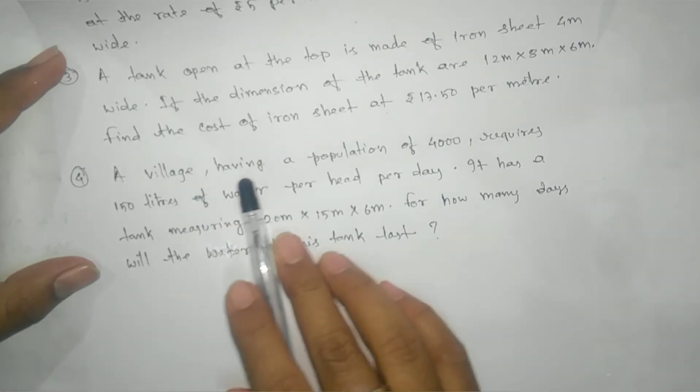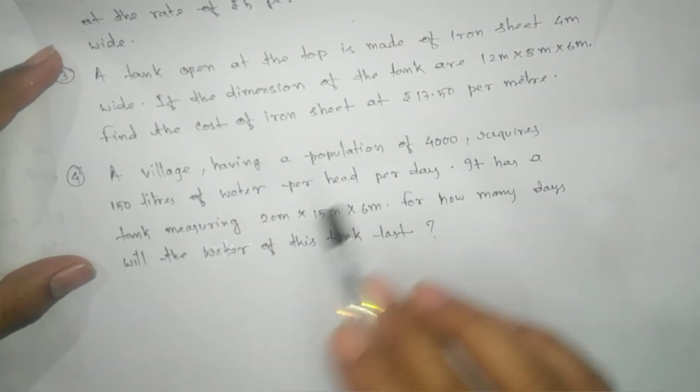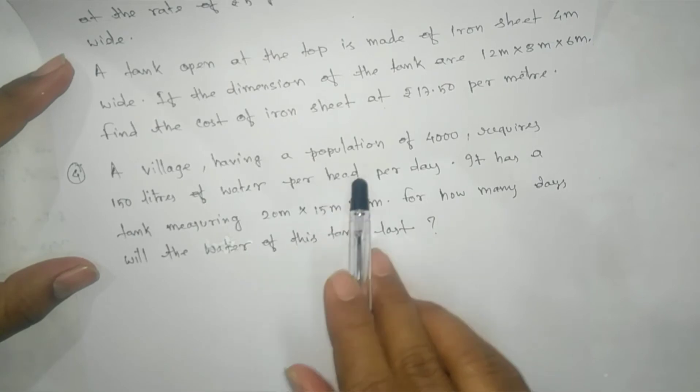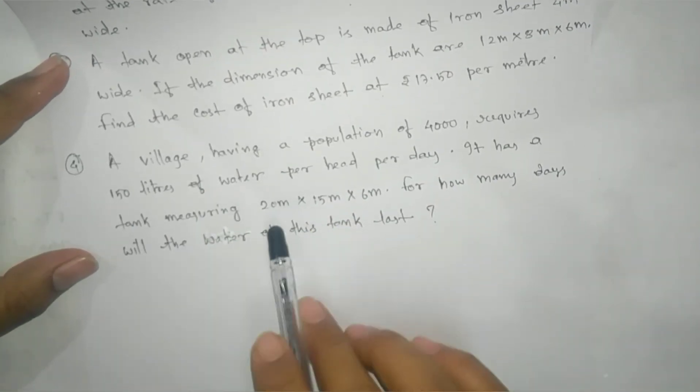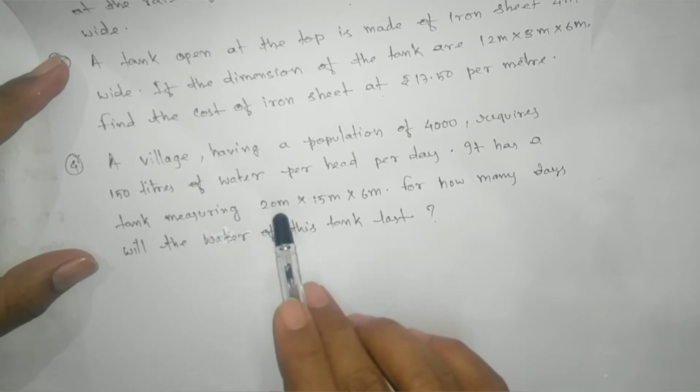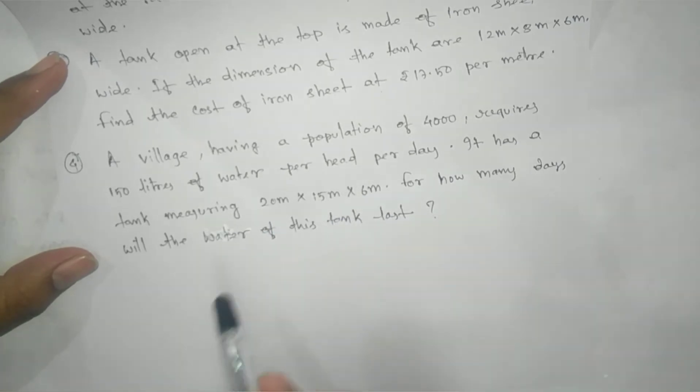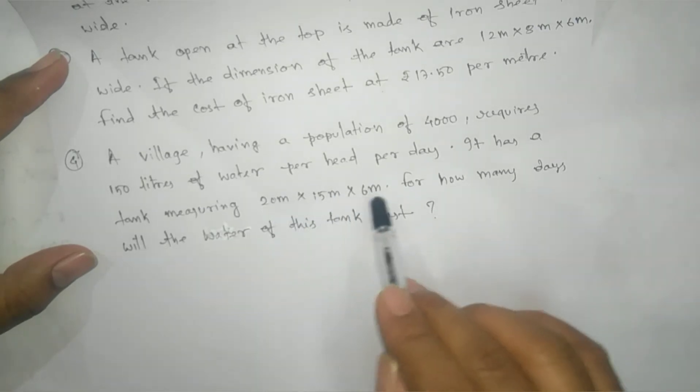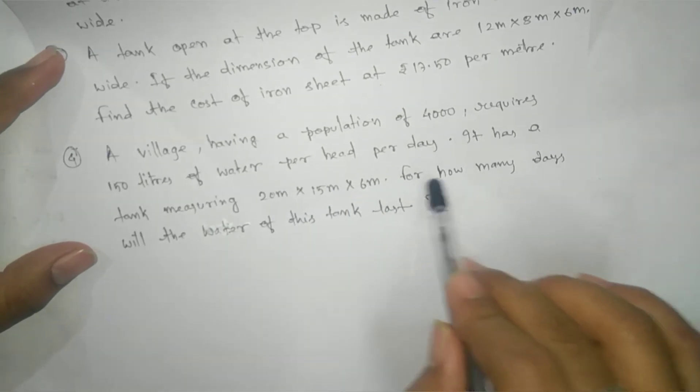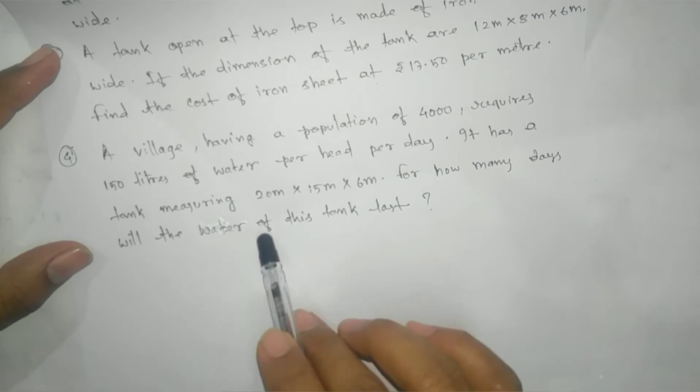Next problem: a village having a population of 4000 requires 150 liters of water per head per day. It has a tank measuring 20 meter by 15 meter by 6 meter. For how many days will the water of this tank last?